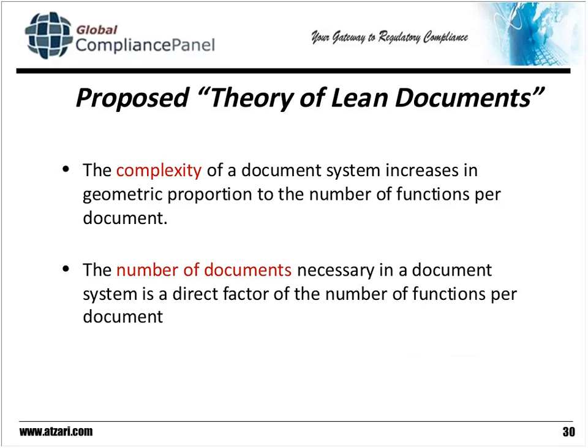If we look at what we've talked about, we arrive at a proposed theory of lean documents. That theory basically says that both the complexity of the document system and the number of documents in that system is really driven by the number of functions per document. Think about that. By creating these multiple functions, we're having to create different combinations of them, so it becomes a geometric or even an exponential explosion of the number of documents.